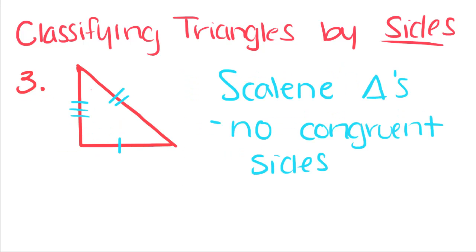The last kind of triangle is a scalene triangle. It is a triangle with no congruent sides. We mark this by putting one tick mark, then two tick marks, then three tick marks, because none of the sides are equal.